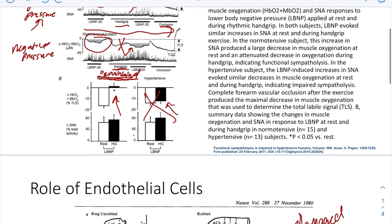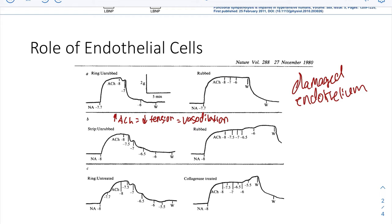And this isn't necessarily related to the functional sympatholysis, but this also has to do with hypertensive regulation in patients. And that also kind of intrigued me. So on this right side, in general, we have damaged endothelium, and on this left side, we have intact endothelium. And we're looking at acetylcholine.